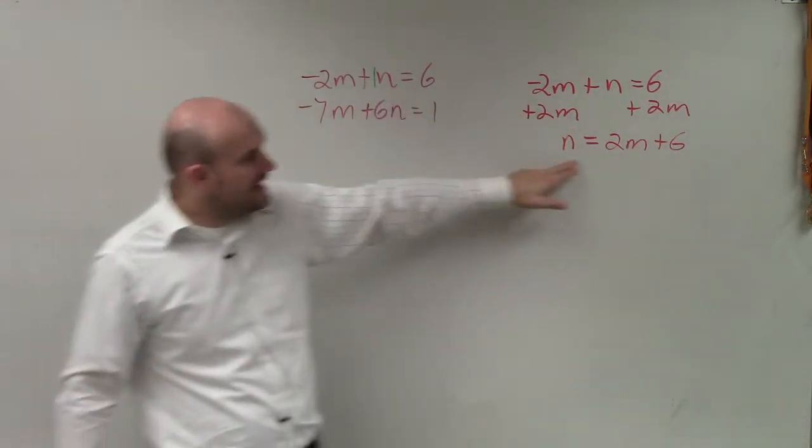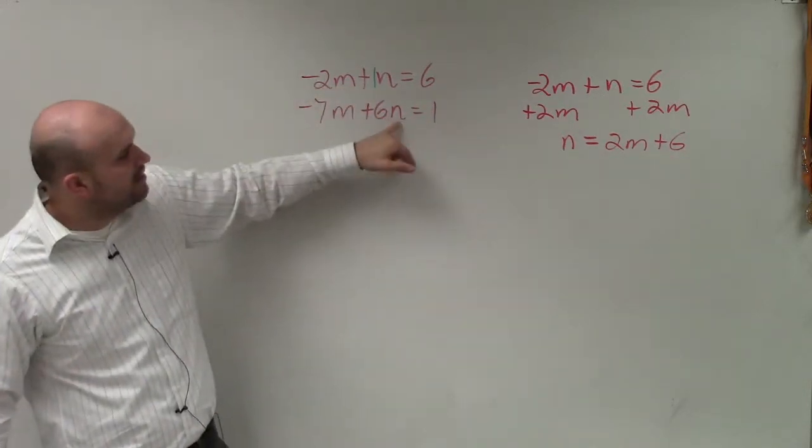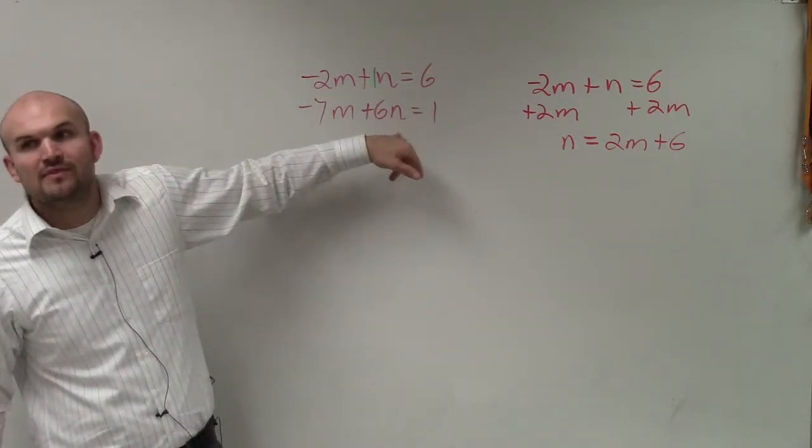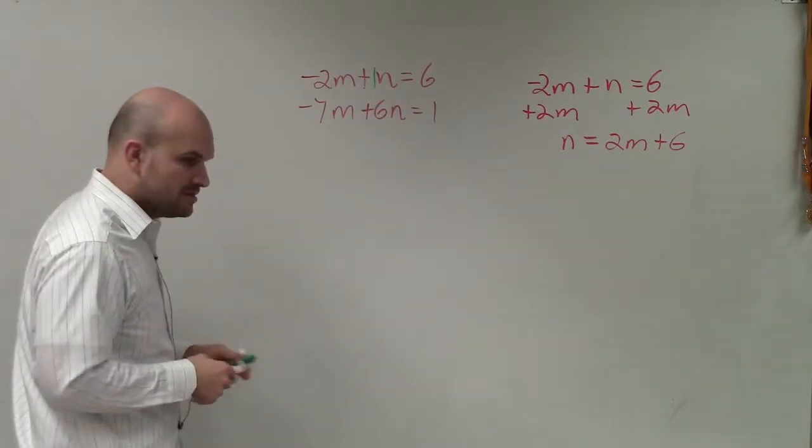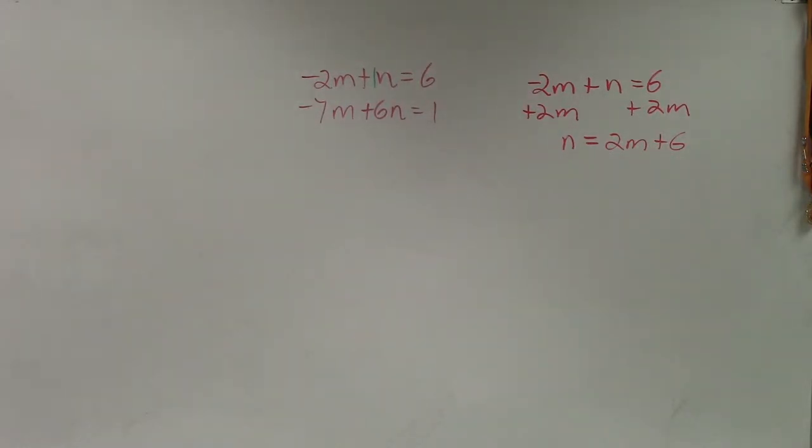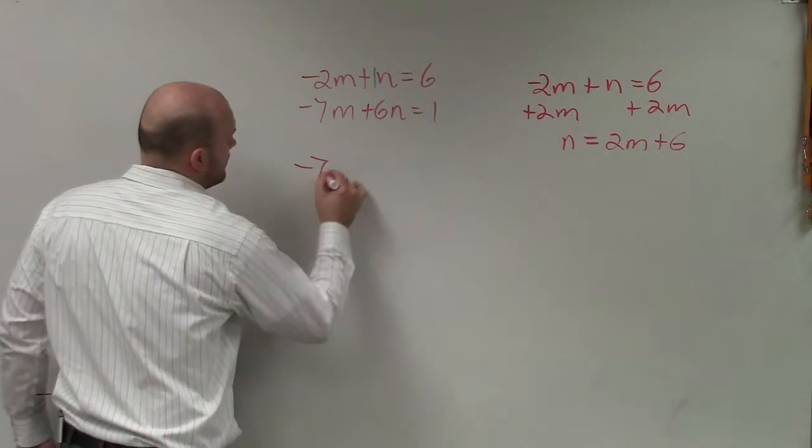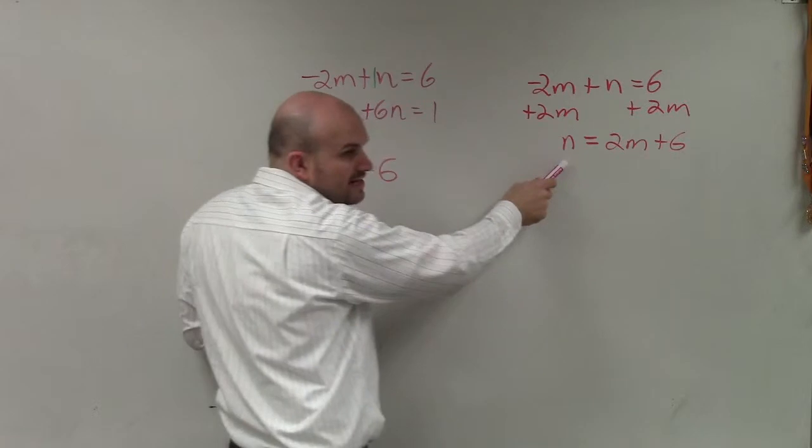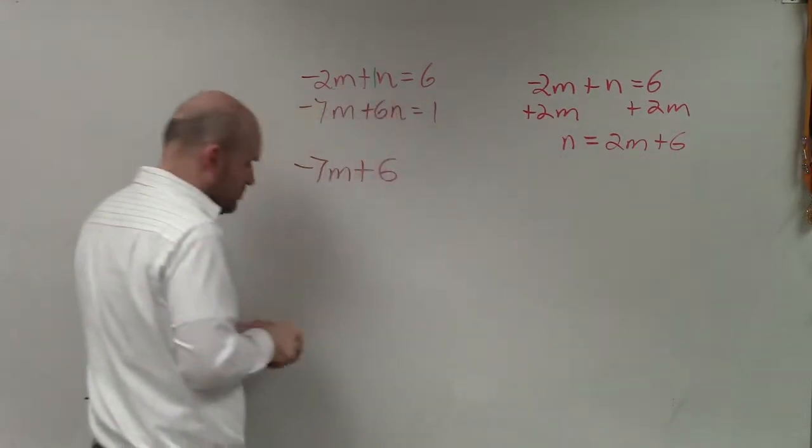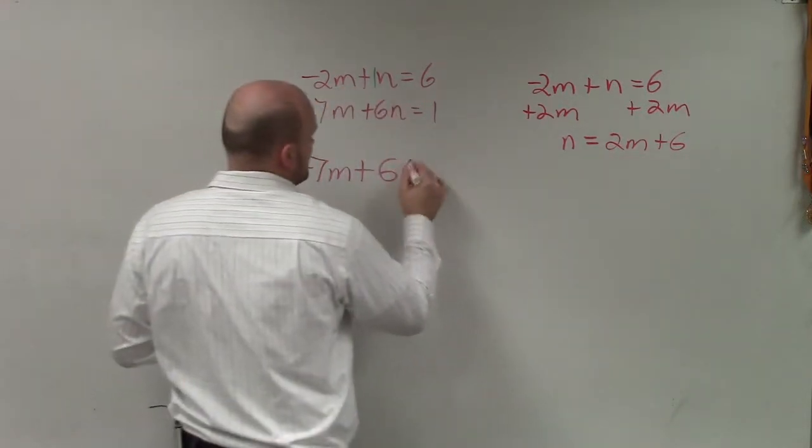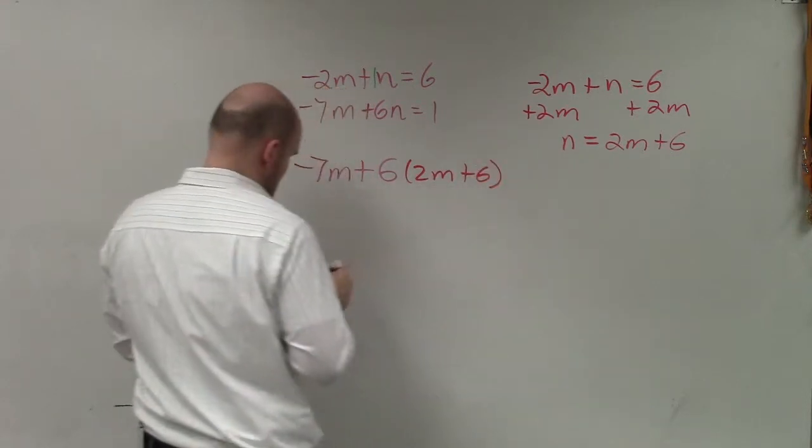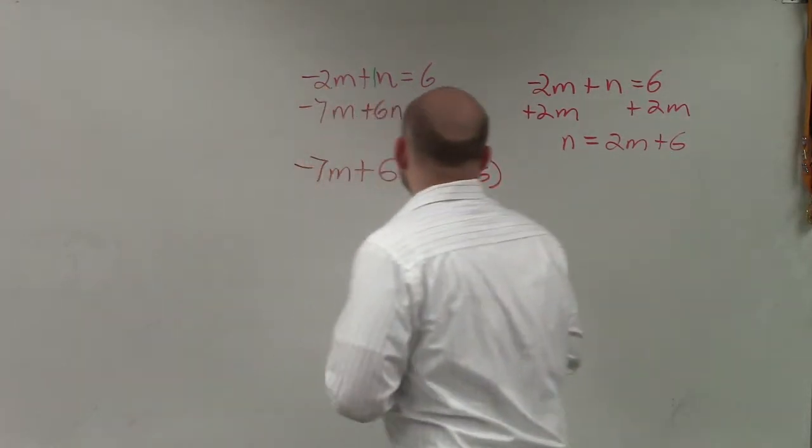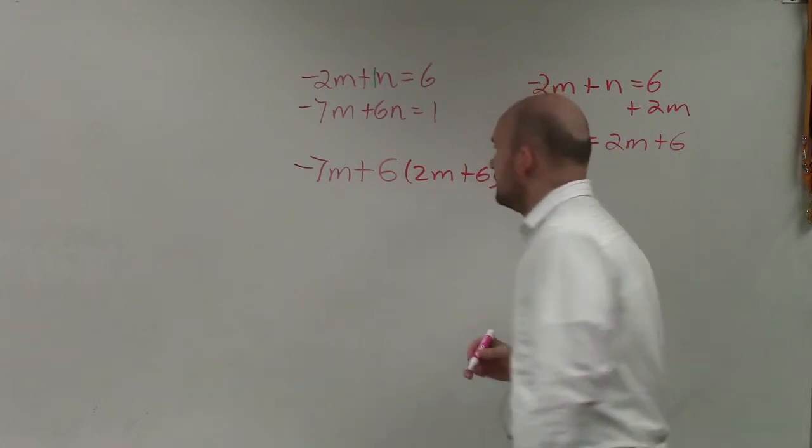Then you're going to take that value and plug it in for the value of that variable into the other equation. So where did my pink go? There's my pink. So therefore, then what it will look like is when you rewrite the second equation, instead of saying 6 times n, I now know what n represents. n represents 2m plus 6 equals 1.